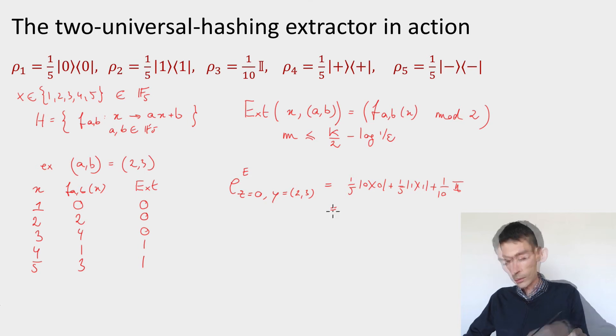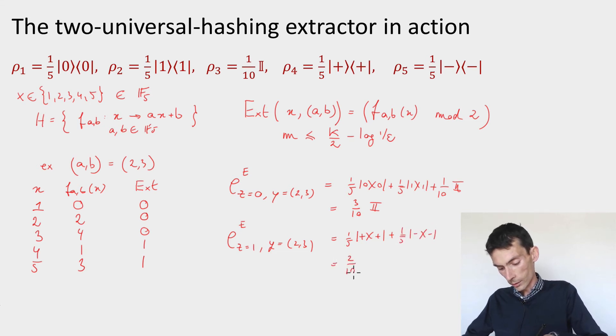And if I look at z equals 1 with the same seed, then what I get is a fifth times |+⟩⟨+| plus a fifth |−⟩⟨−|, so we get 2 tenths identity. So what happened here?